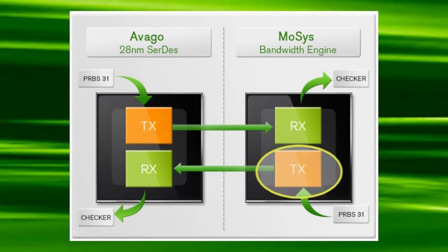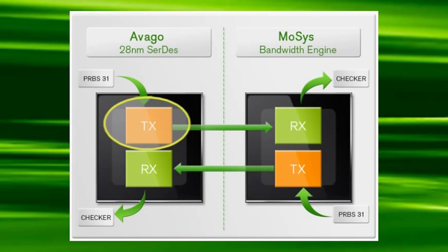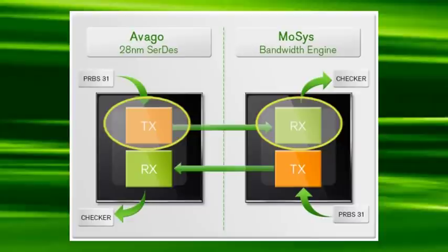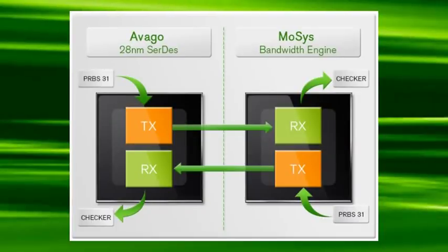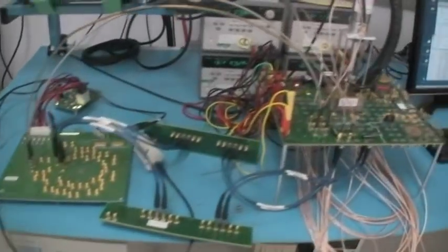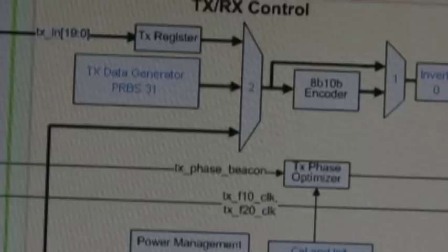We set up for this demonstration by connecting the bandwidth engine transmitter or TX to the Avago receiver or RX, then the Avago TX to the bandwidth engine RX over a channel of about 10 inches of FR4 trace. We are running a PRBS 31 pattern generator in both lanes concurrently.